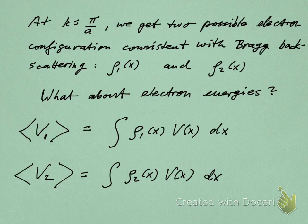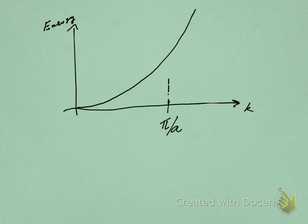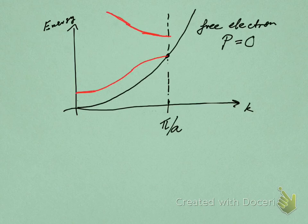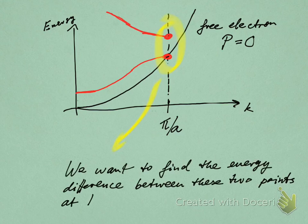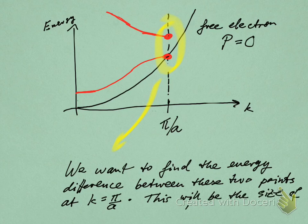How do I do that? Well, I'm going to try to convince you that we have to do this integral that I have here on the board. Before I try to convince you that that is the right equation, let's just step back for a second and look at our picture again. Free electron and Kronig-Penney model—we get this band gap there at π/a, and we want to find the energy difference between those two points. At k equals π/a, we want to call that the band gap there. So that's our goal, ultimately, is to find that the size of that band gap.